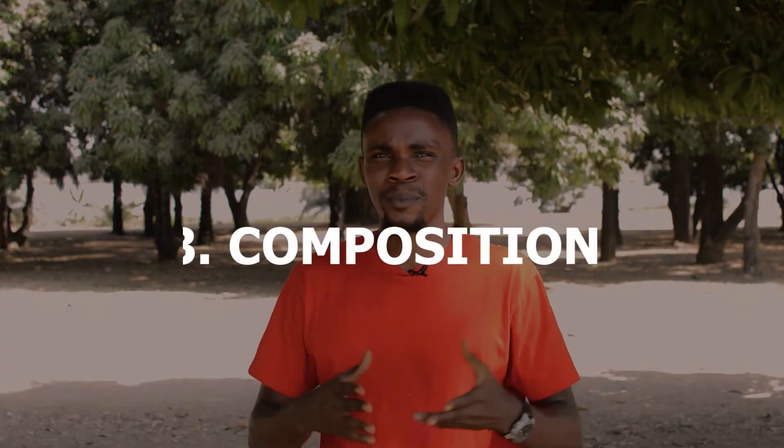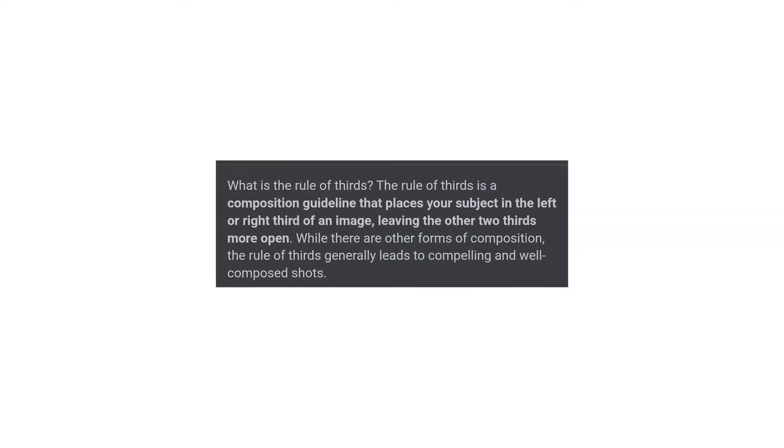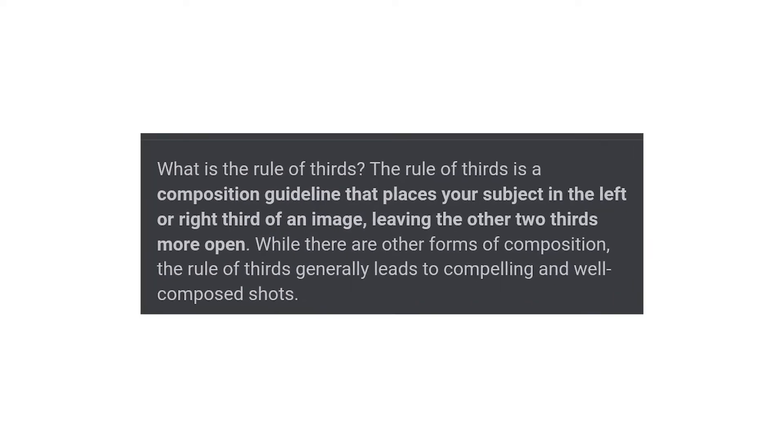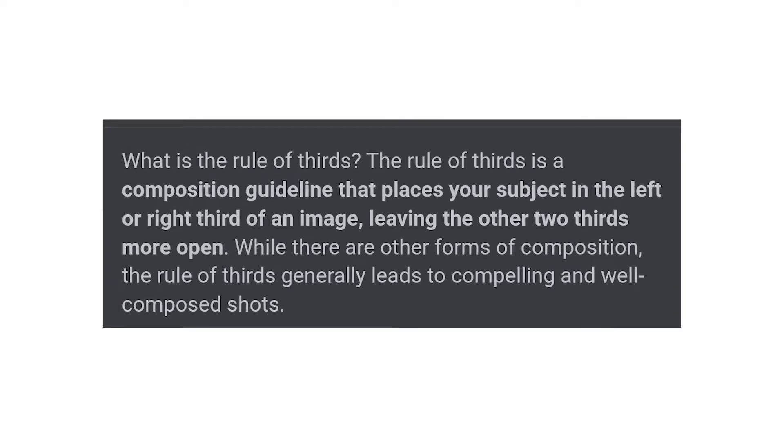The third tip is composition. Composition is how you arrange your subject or object in a particular frame. To get better pictures, you have to make sure that your subject is properly arranged in a frame. For an extra composition tip, you can use things like your environment or the rule of thirds to properly compose your image. The rule of thirds is basically a composition guideline that places your subject in the left or right third of an image, leaving the other two thirds more open.